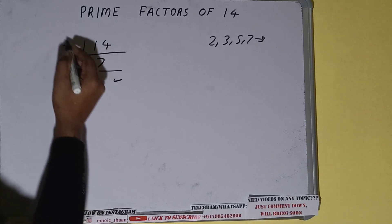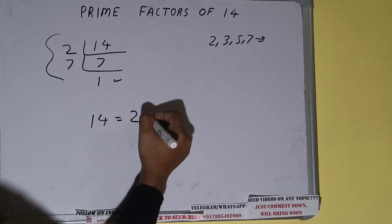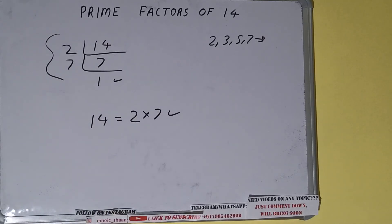Once we get 1, we need to stop, and whatever is on the left-hand side will be the set of prime factors for the number 14. That is, prime factors of 14 will be 2 cross 7. That will be the answer.